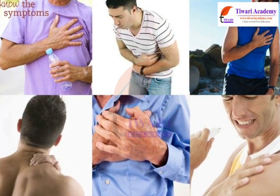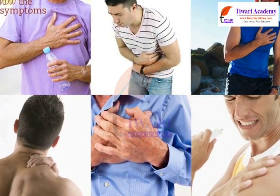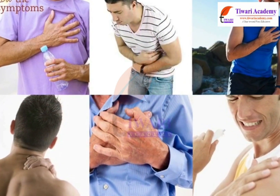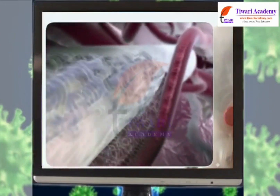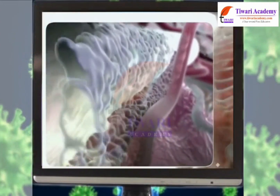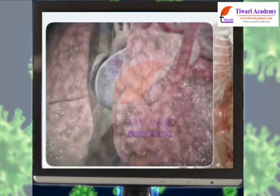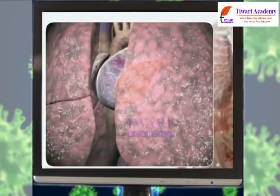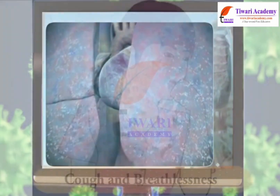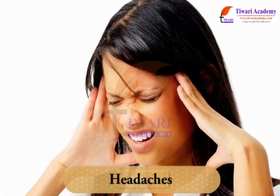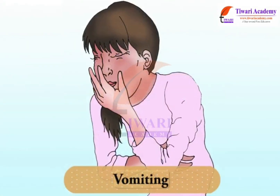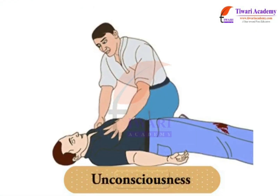Each infectious disease has its own specific signs and symptoms. The signs and symptoms of a disease depend on the tissue or organ which the microbe targets. If the lungs are the target, symptoms will be cough and breathlessness. If the brain is targeted, symptoms include headaches, vomiting, fits or unconsciousness.